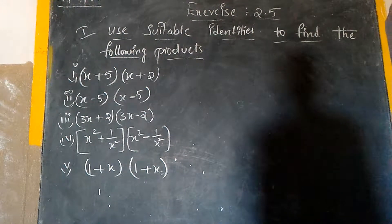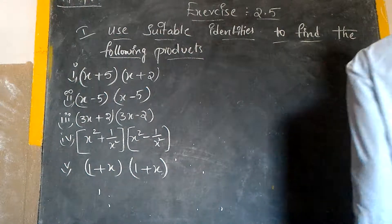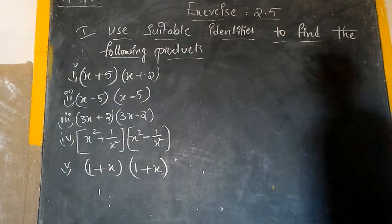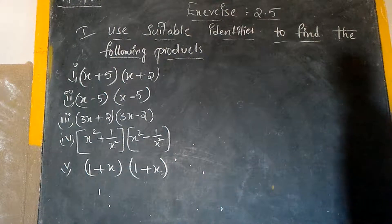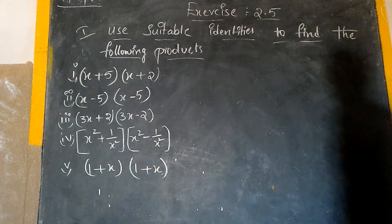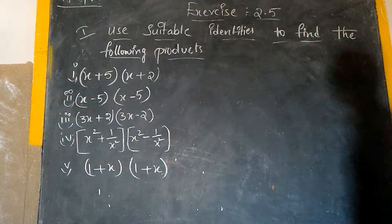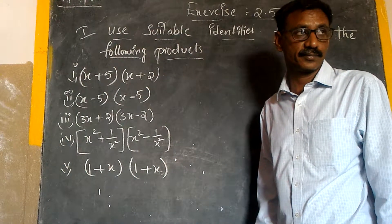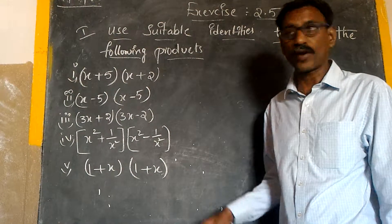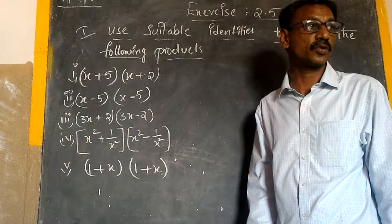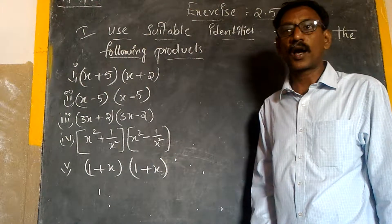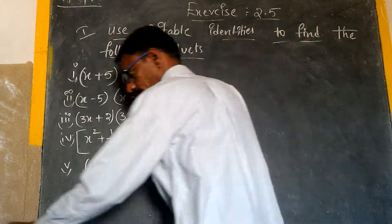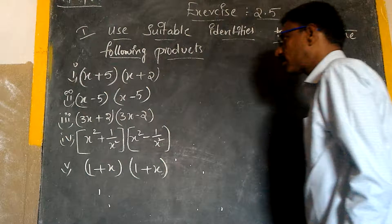Using suitable identity to find the following products. Here some products are given. We have to find the products with the help of suitable identity. We already discussed it in eighth class, but even now I would like to explain again.